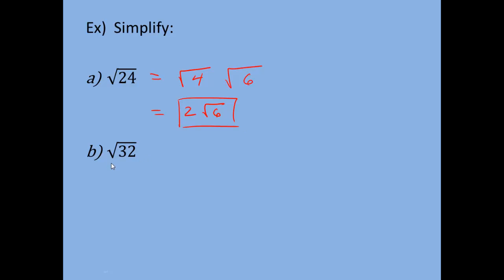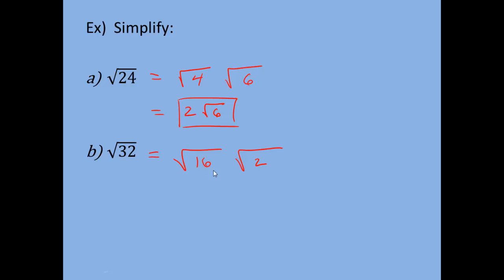For the square root of 32, 32 is not a perfect square — there isn't a number times itself that gives you 32. So we want to break this down into the highest perfect square factor of 32 times a non-perfect square. 32 actually has a couple of perfect square factors: 4 is a factor of 32, and 16 is also a factor of 32. We want the highest one, so we take the square root of 16 times the square root of 2, because 16 is the highest perfect square factor.